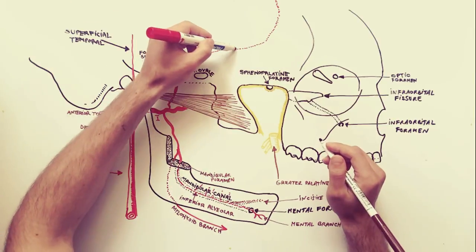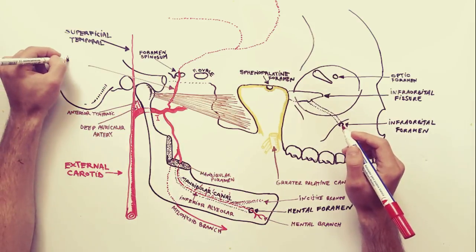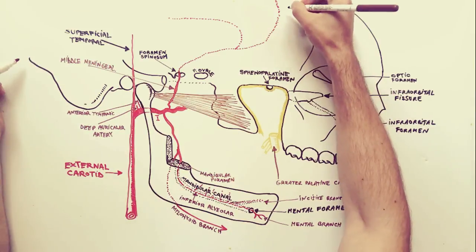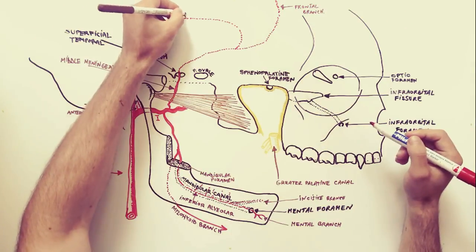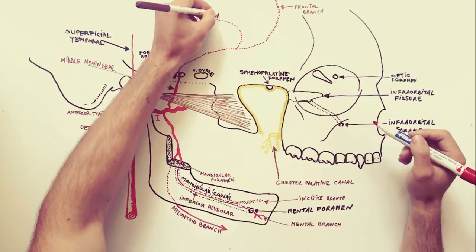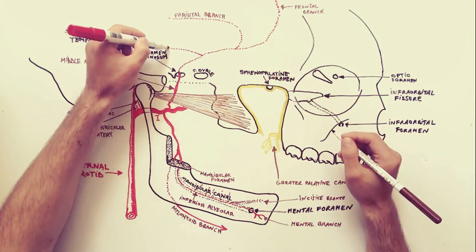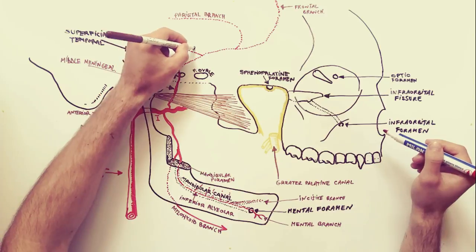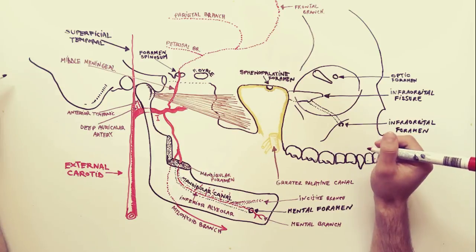The middle meningeal artery then runs forward in a groove on the great wing of the sphenoid bone and divides into two branches. The frontal branch, the larger, crosses the great wing of the sphenoid. The parietal branch curves backward on the squamous part of the temporal bone to reach the parietal bone. Apart from these two branches, the middle meningeal artery also gives off numerous small vessels that supply the trigeminal ganglion, as well as a petrosal branch.